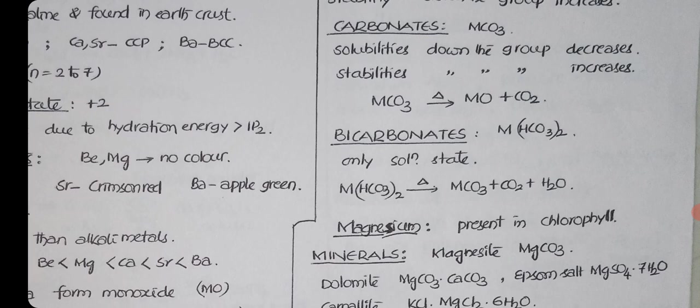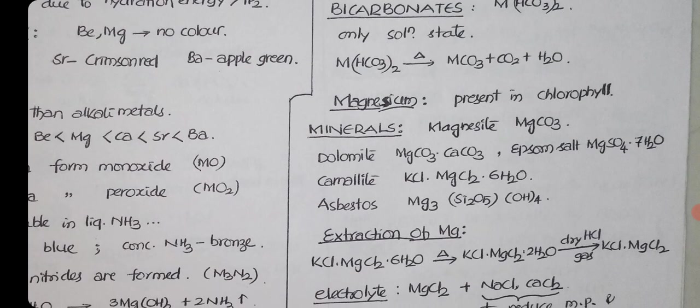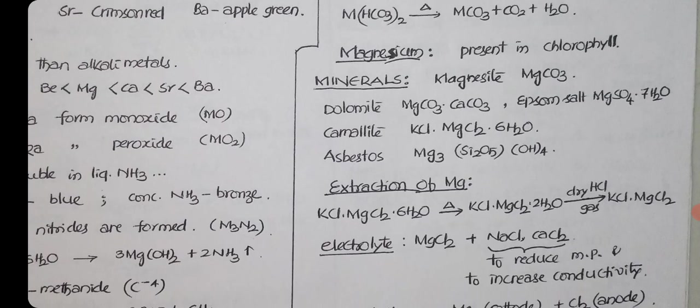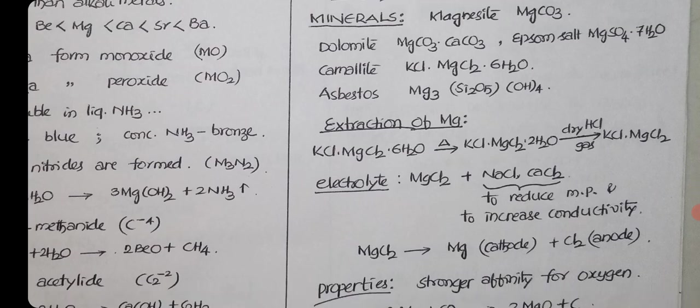In this group, we have beryllium. Beryllium and aluminum show diagonal relationship. That point is also important. Magnesium is present in the chlorophyll, Mg2+. Magnesium minerals are magnesite MgCO3, dolomite MgCO3·CaCO3, Epsom salt MgSO4·7H2O, carnallite KCl·MgCl2·6H2O, asbestos Mg3Si2O5(OH)4.